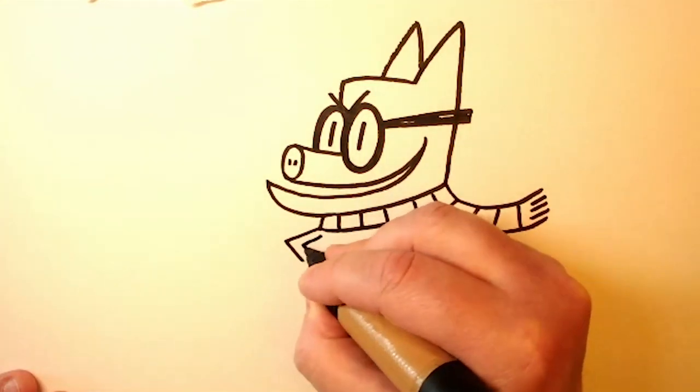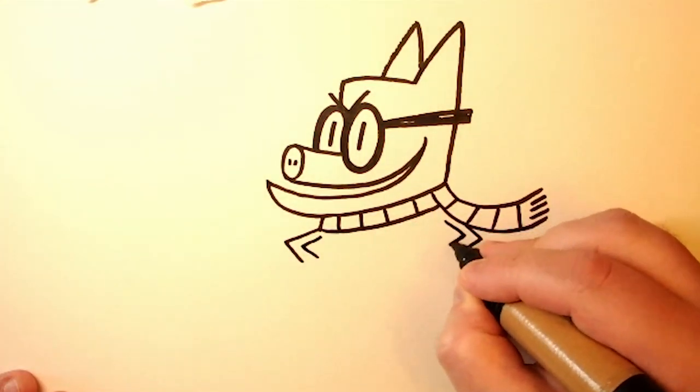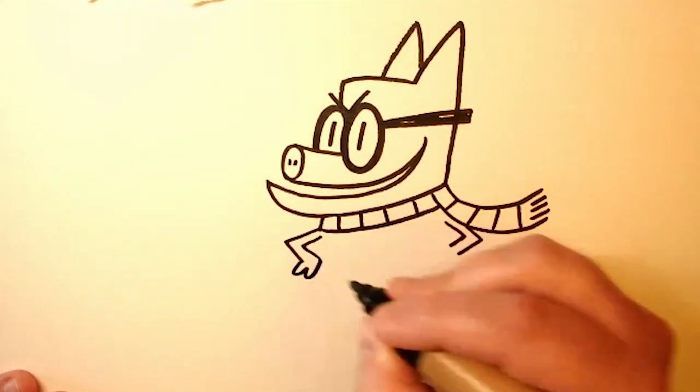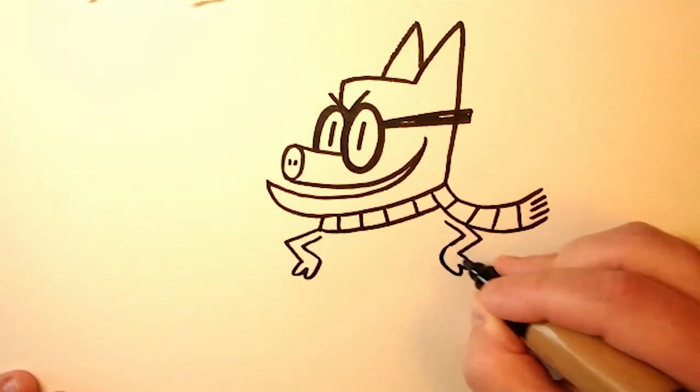Now Piggy's going to have his arms bent at the elbows. Just two little triangular lines like that. And then we add his hands and those are just kind of like drawing the letter W.